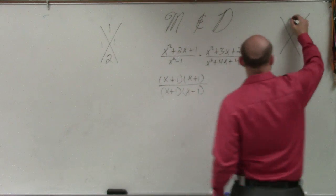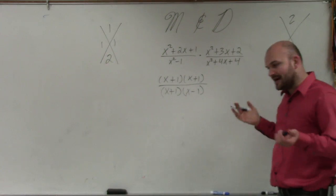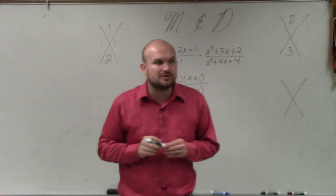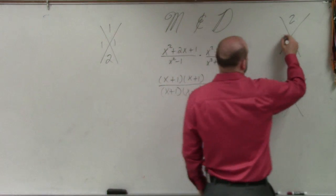Over here, I have what two numbers multiply to give me 2, add to give me 3. Again, obviously, since they're multiplying to give you 2 and add to give you 3, those two values are going to be 2 and 1.